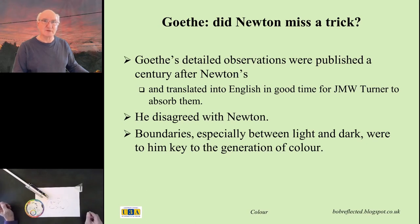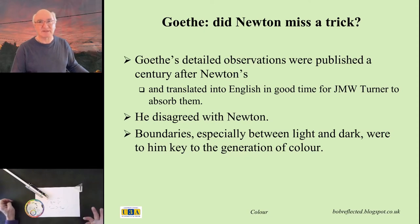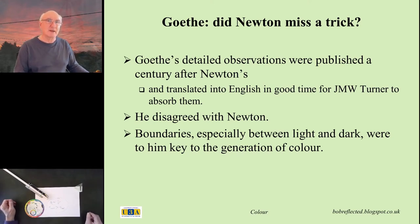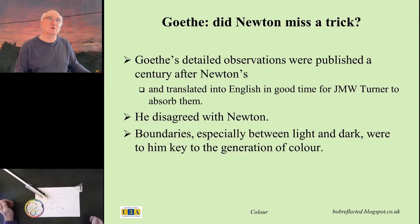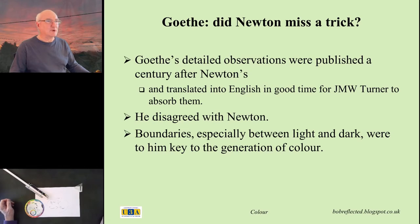Goethe disagreed with Newton's approach quite profoundly. In Goethe's case he started by looking closely at the boundaries between things — particularly the boundaries between light and dark. Some of the examples I'm going to show you, actually photographed in this very room, rely on looking at the colours coming to our eyes from the edge of a window pane, next to the wooden window jamb. Boundaries were key to Goethe — that's the point I'm really trying to stress.